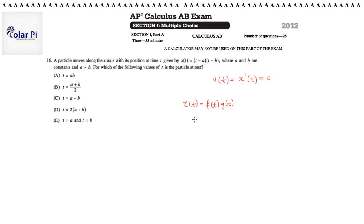And so if you do product rule there, x prime of t is going to be the derivative of f of t, which is, well, since f of t is t minus a, the derivative of that is just one, times g of t, which is t minus b.